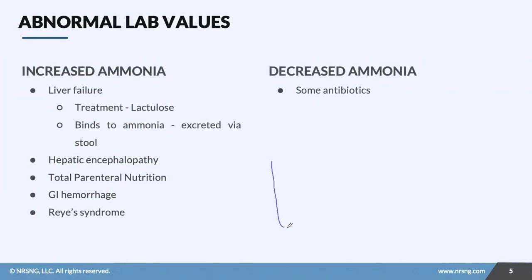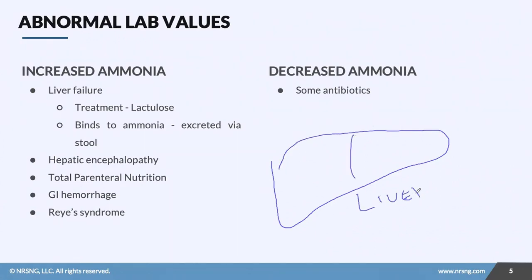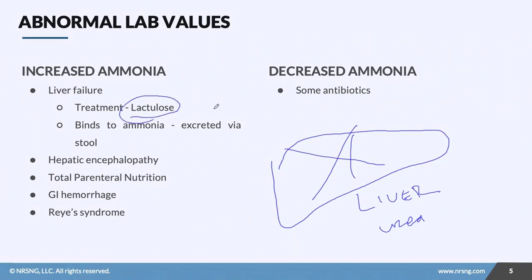When are we going to see high ammonia levels? Think about the liver — it's only going to rise if the liver is not able to process ammonia into urea. We're going to see it raised with liver failure. The way we treat it is with a medication called lactulose, which is actually a laxative. We give it PO or PR — per rectum — and in the neuro ICU these patients often have a rectal tube for administration.